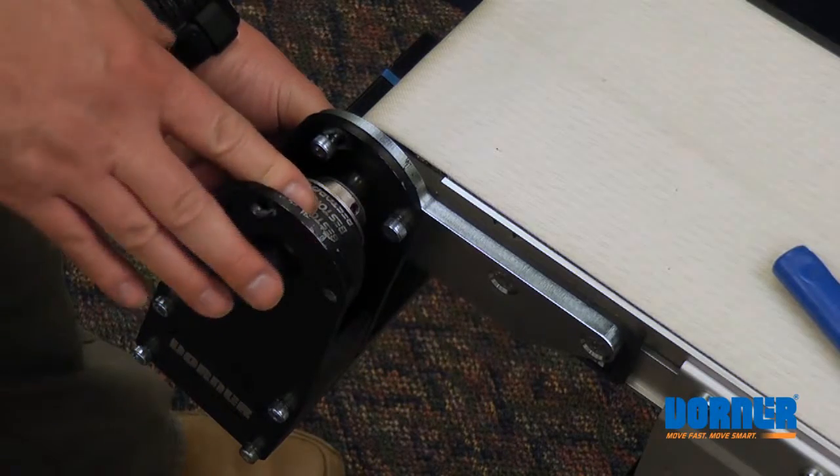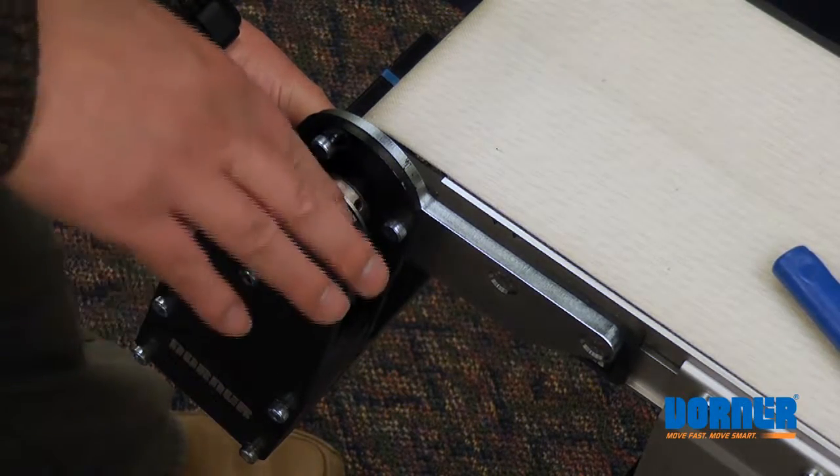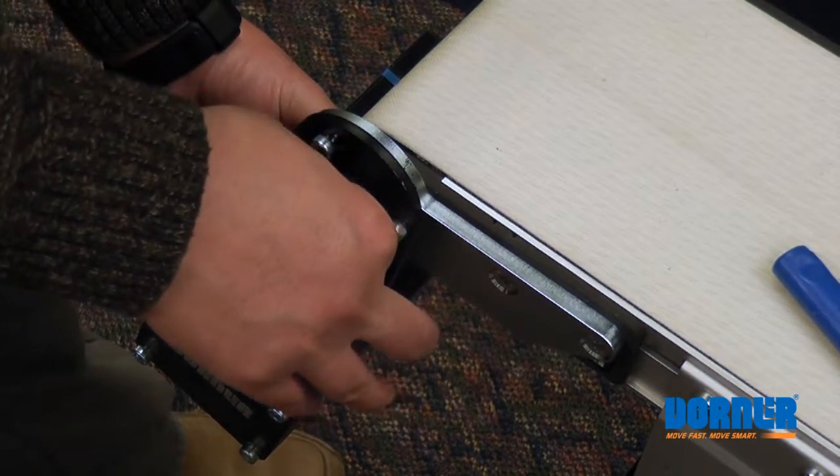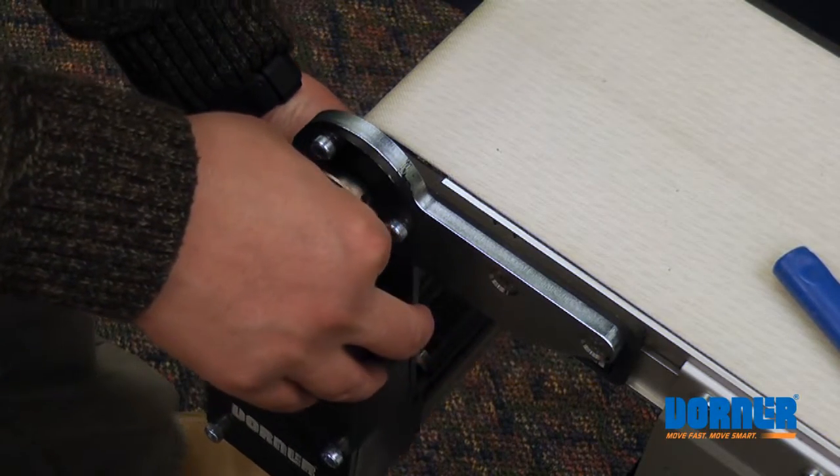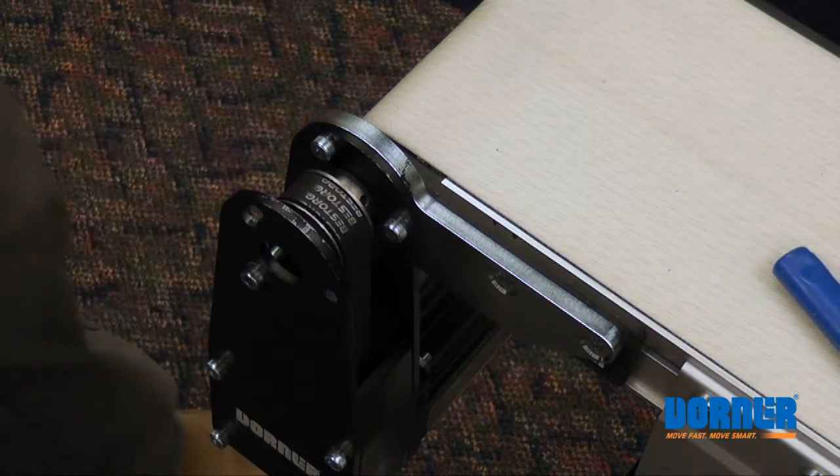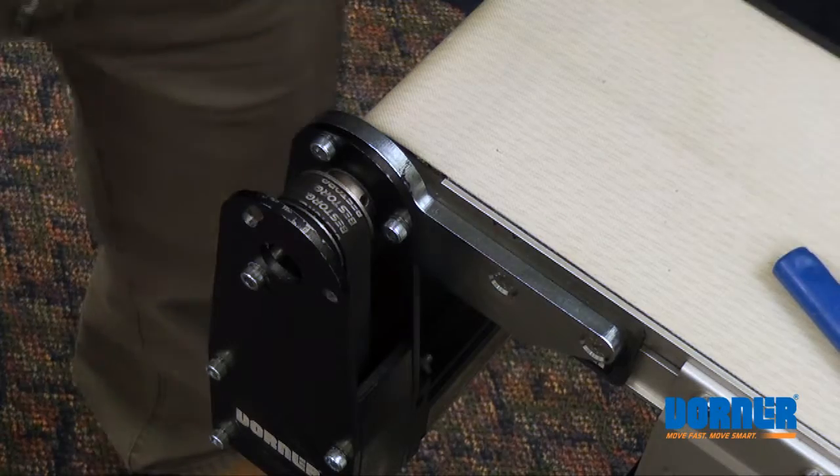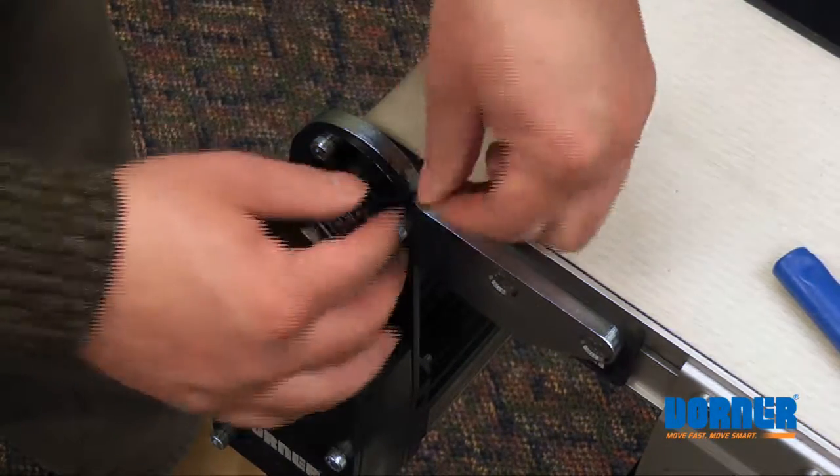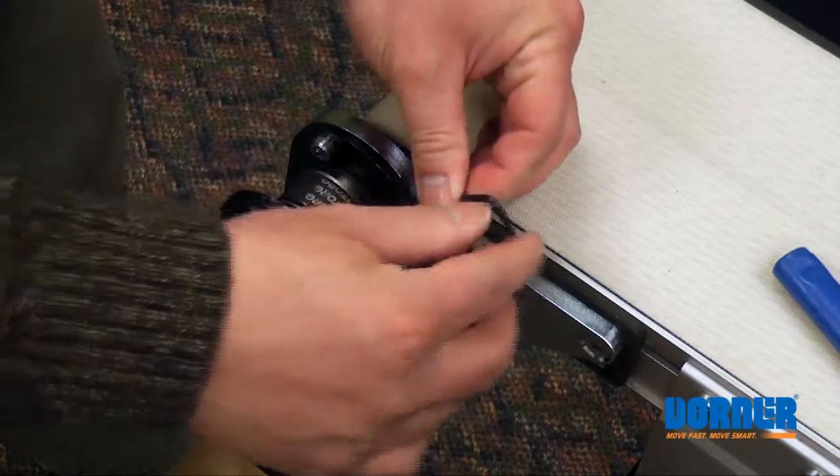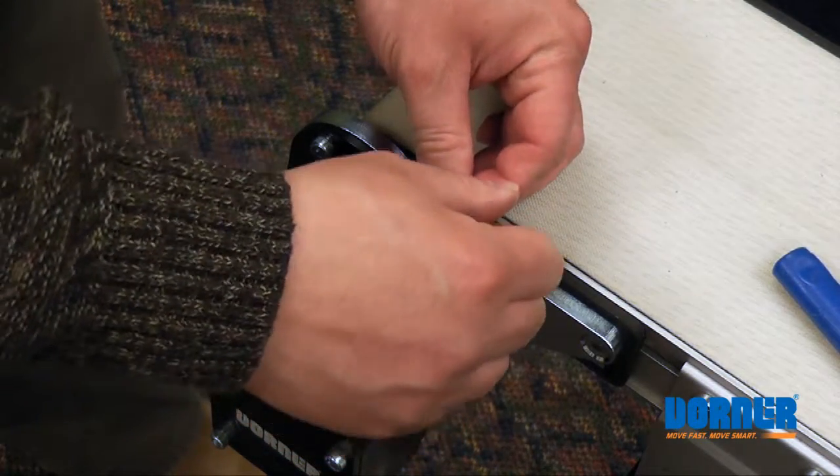With it tensioned loose, push the pulley back against the back plate. And then lower the motor or rotate the motor to its initial tension set. Then, use a two and a half millimeter wrench to tighten the set screws on the pulley.